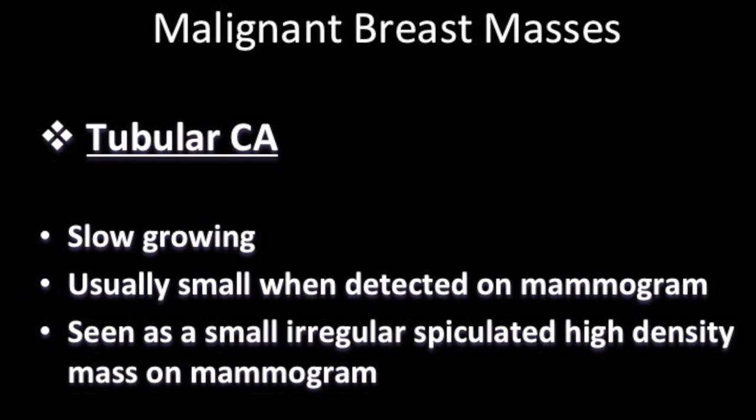The third type, tubular carcinoma, is a slow growing tumor. They are usually small when detected on mammograms, appearing as an irregular spiculated high density mass.